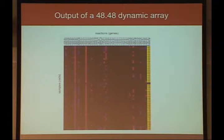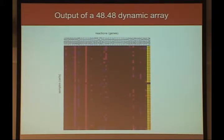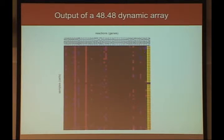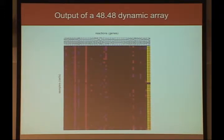The output from a 48×48 array has genes across the top and samples — in this case single tetramer-positive cells — down the side, approximately 48 cells. The last two columns are positive controls lighting up in yellow, and the middle row with everything blank is the no-template control, confirming the system works. You can see certain genes are amplified and others are not.